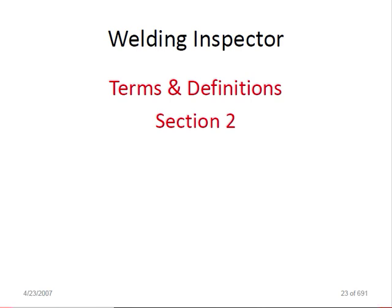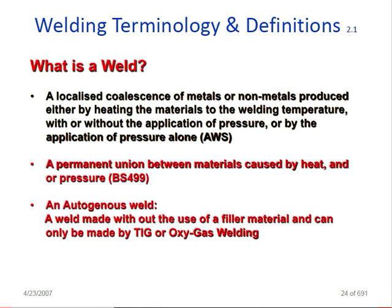What is welding terminology and definition? What do we need to know as a welding inspector? What is a weld? The localized coalescence of metals or non-metals produced either by heating the material to welding temperature, with or without the application of pressure, or by application of pressure alone. As per BS499, a weld is a permanent union between materials caused by heat or pressure.